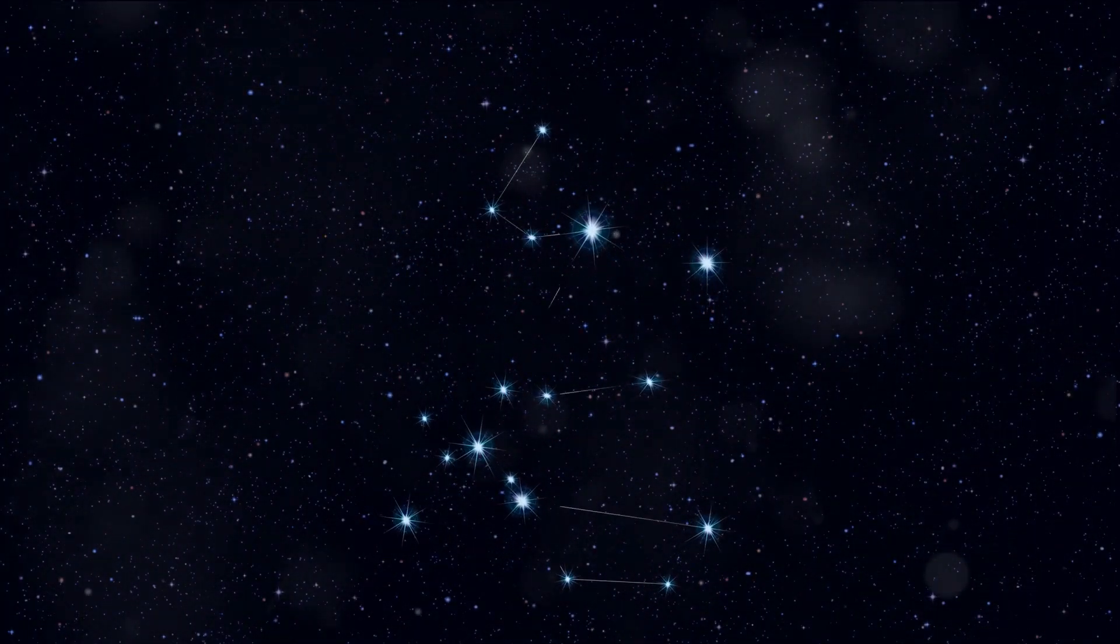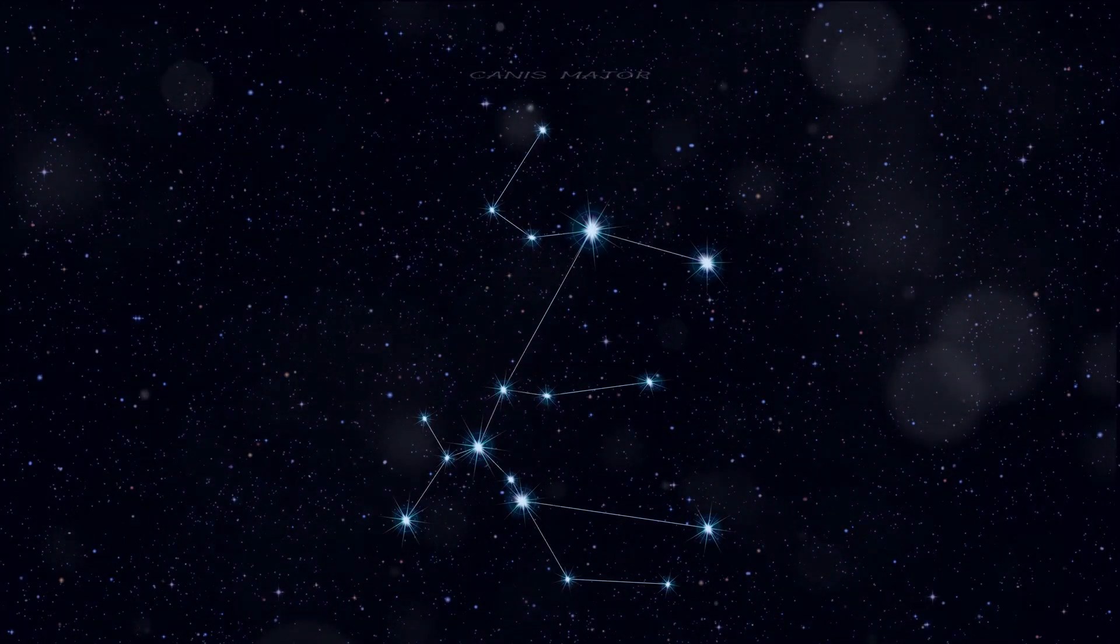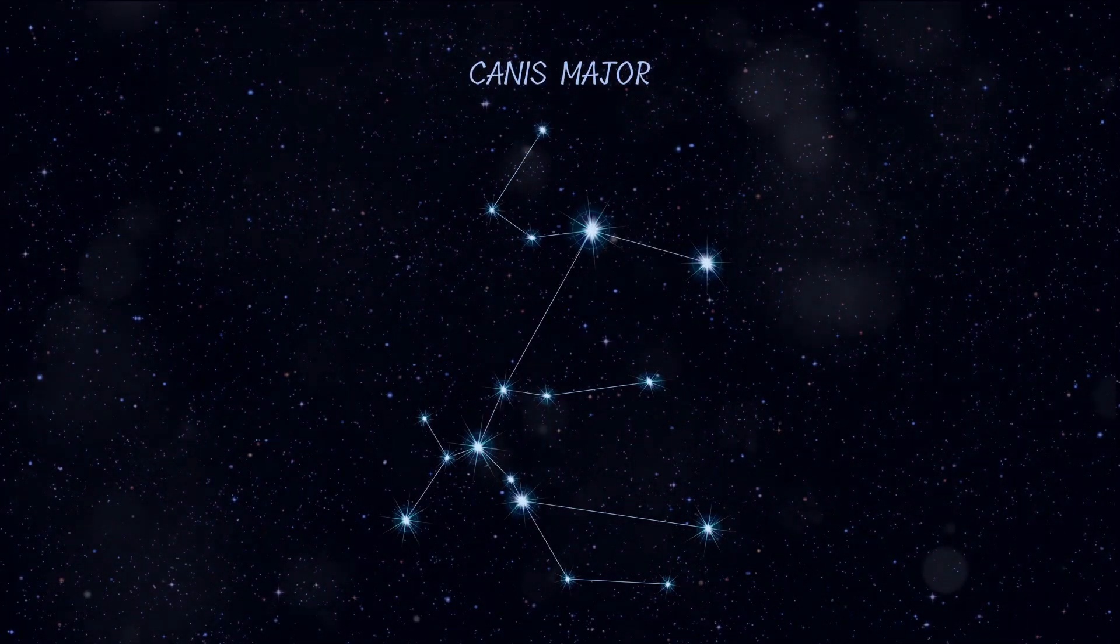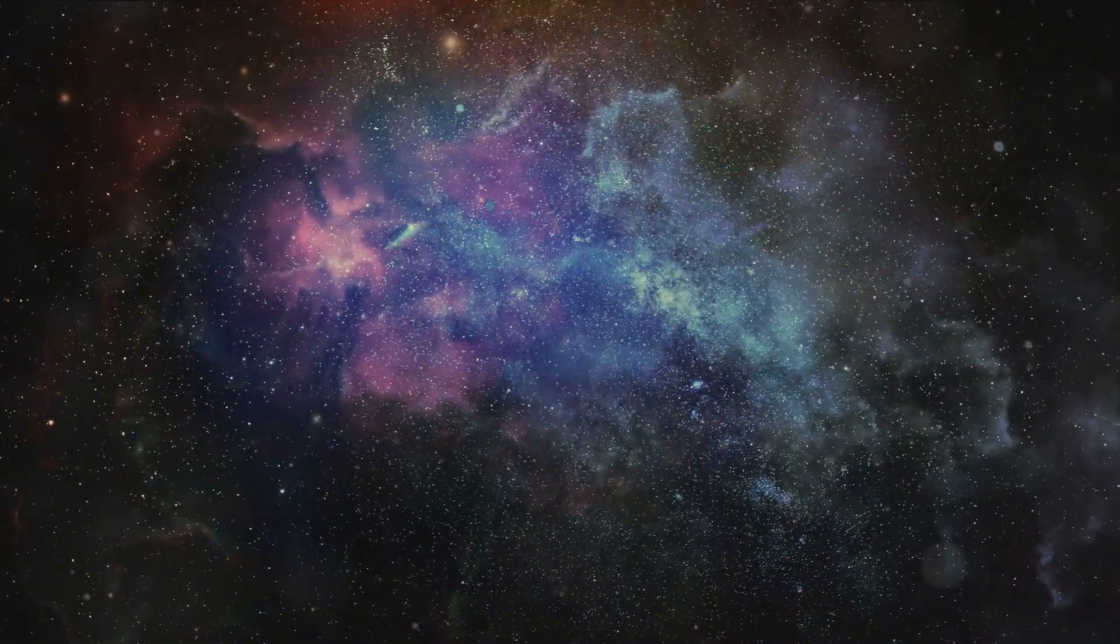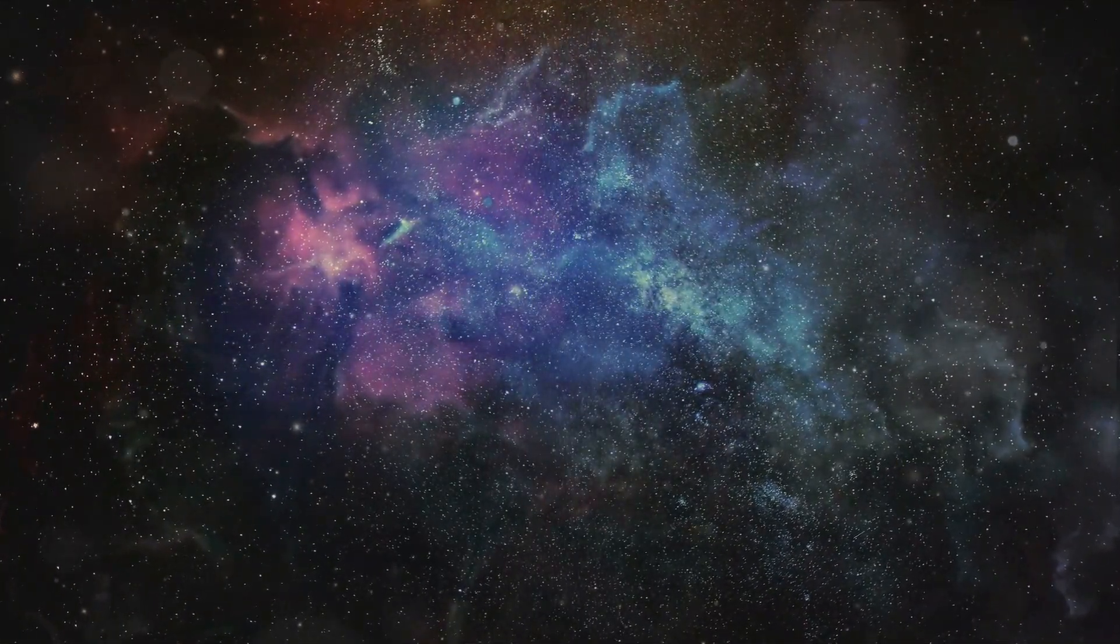Last but not least let's howl for Canis Major, the bigger dog. This constellation contains Sirius, the brightest star in the night sky. It's also said to represent another one of Orion's hunting dogs. These constellations are not just clusters of stars, they are pieces of history, myths, and stories that have been passed down through generations.